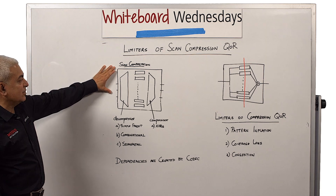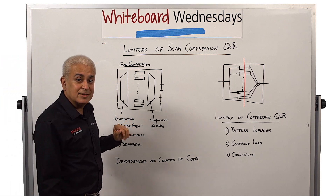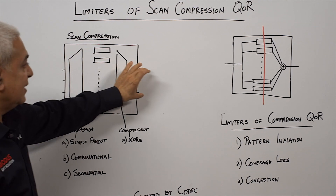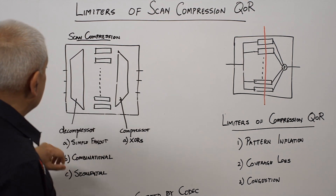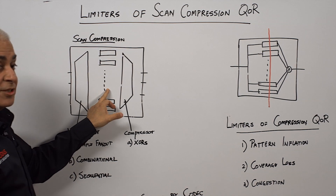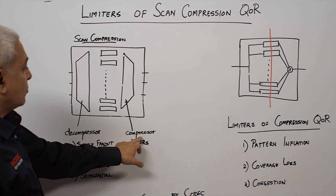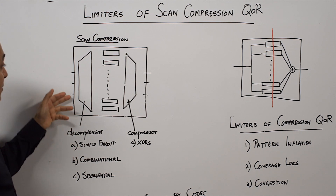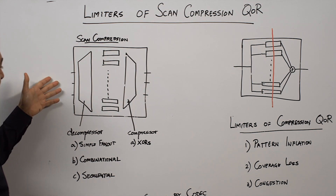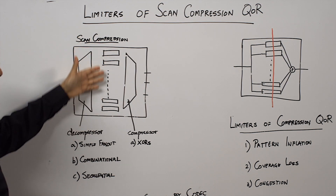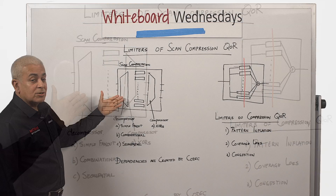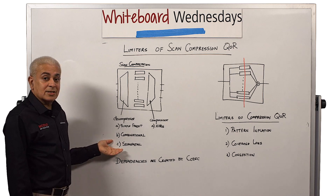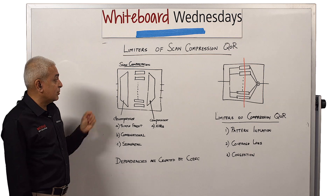Here what you see is a scan compression implementation, introduced in a previous Whiteboard Wednesdays. Many small scan chains are fed from few scan inputs and are connected to few scan outputs. The interfacing logic between the scan ins and the chains is called a decompressor. This decompressor could be constructed with simple fan-out logic, simple combinational logic built out of multiplexers, XORs, or any other logic gate, or it could be built out of sequential circuits with a state machine to distribute values across the scan chains.